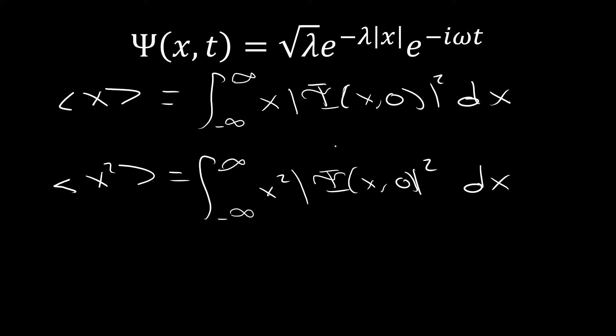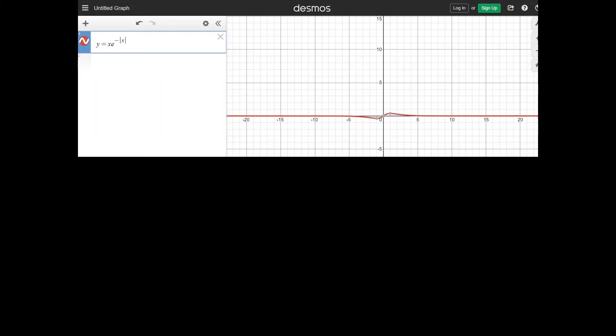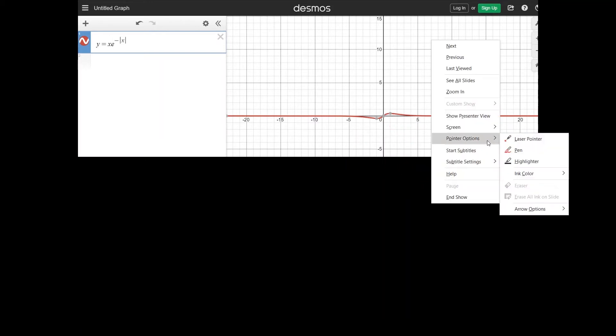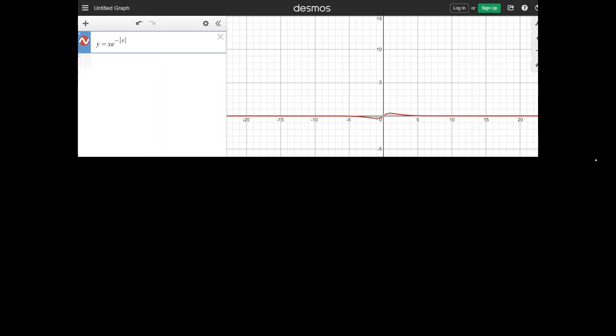So let's begin by doing the expectation value for x because this is one that's actually fairly straightforward. You can see that we plotted this function just like in part A, plotting what we're integrating is actually incredibly useful. And what you can see here is that on both ends, we have something that is equal and opposite.